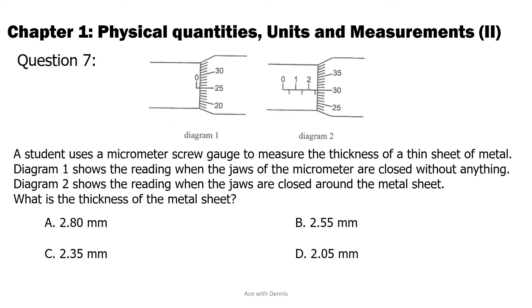The answer is B. 2.55 mm. From diagram 1, the zero error is positive 0.25 mm. From diagram 2, the reading is 2.80 mm. Actual reading is 2.80 minus 0.25. And the answer is 2.55 mm.